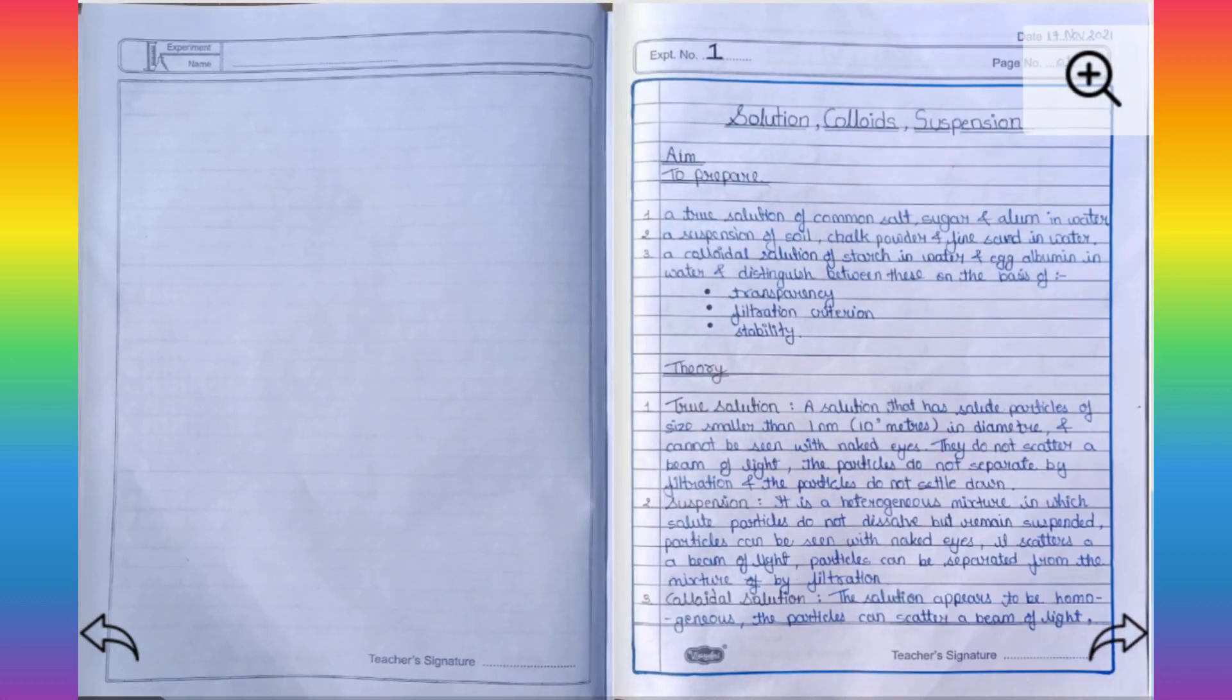From this page, I start my practicals. On left corner, I write experiment number and on right corner, I write date and page number. Then on the middle, I write experiment topic. Then aim or to prepare. Then below, I write theory.